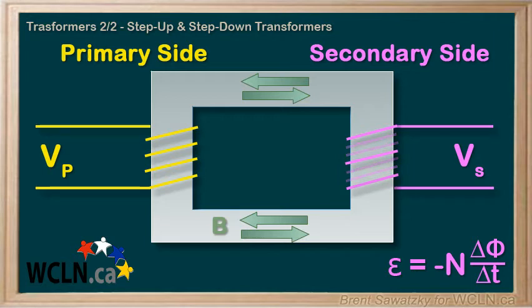Now, if we decrease the number of loops on the secondary side — that is, N becomes less — then the induced EMF is smaller, which means a smaller output voltage. So fewer loops on the secondary side gives us a step-down transformer: the voltage is stepped down or decreased, and the current would be increased.